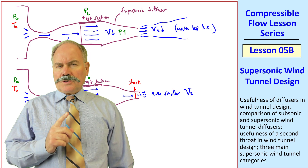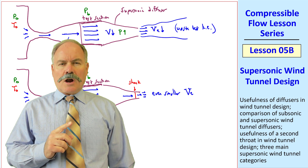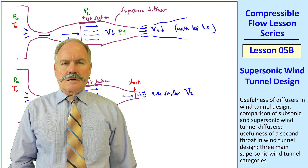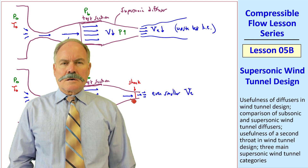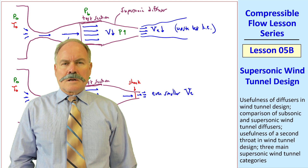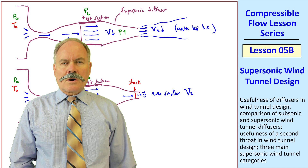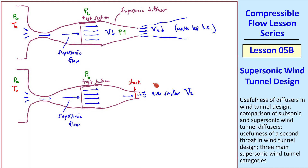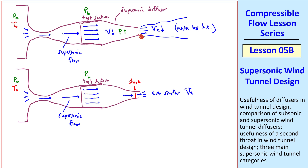By the way, we can make the same argument here that we did for the subsonic wind tunnel. Compared to the case without the diffuser, the pressure was P_b at the exit, but now since pressure rises through the diffuser and pressure is P_b at the exit, the pressure upstream is lower than it was without the diffuser. Since the pressure here is lower, we can get away with a smaller P_0 to generate the same Mach number flow. And since it costs money to pump up the tank, you can save money by adding the diffuser.